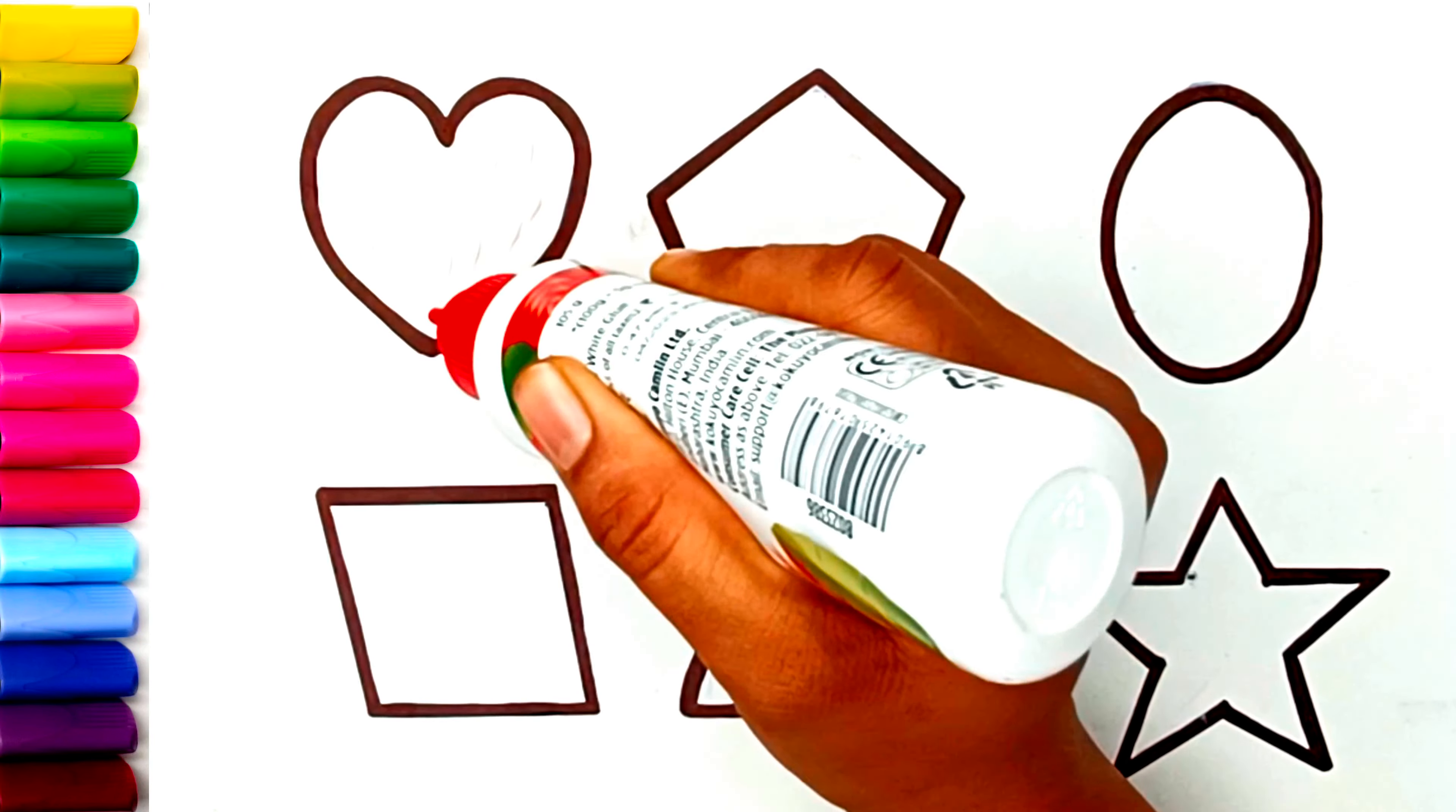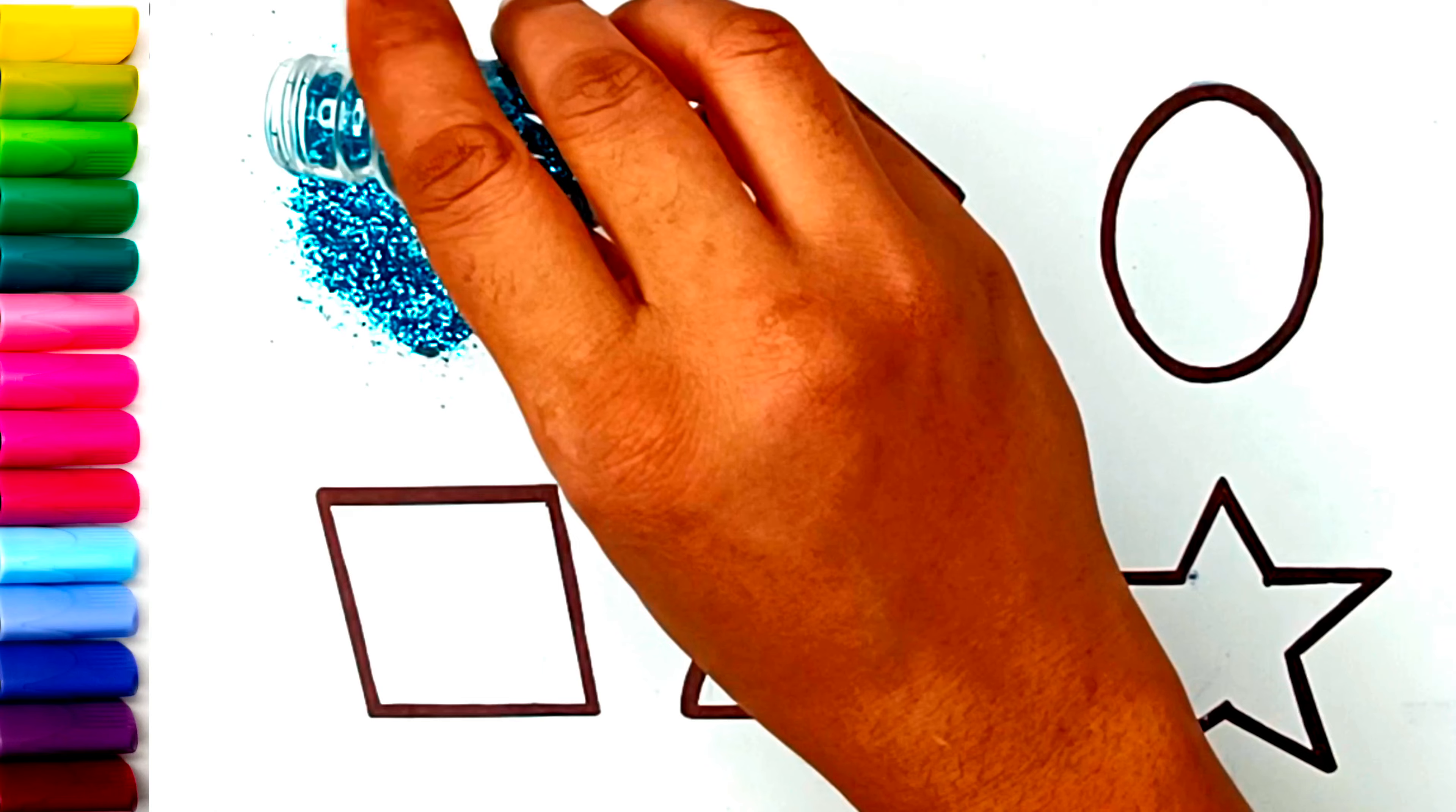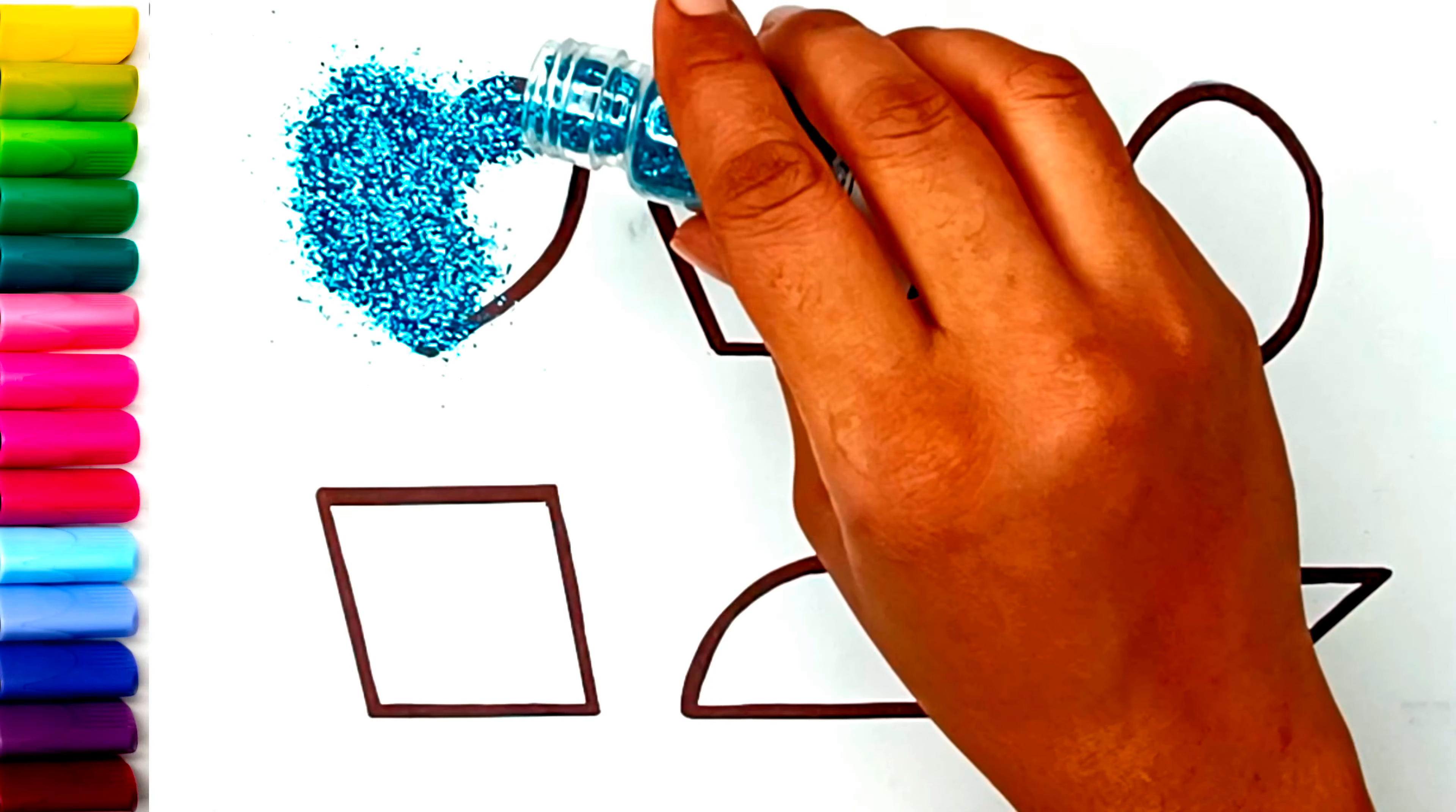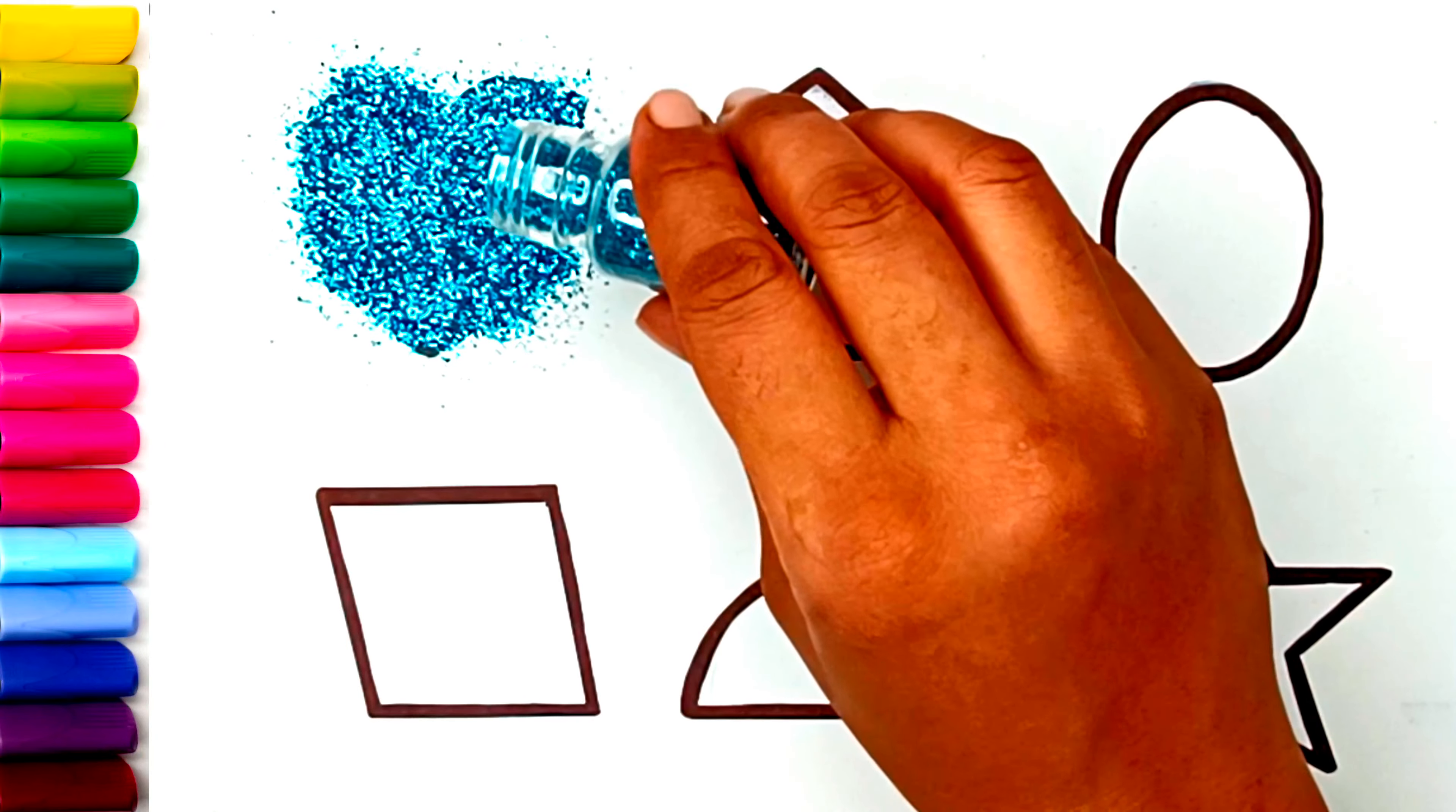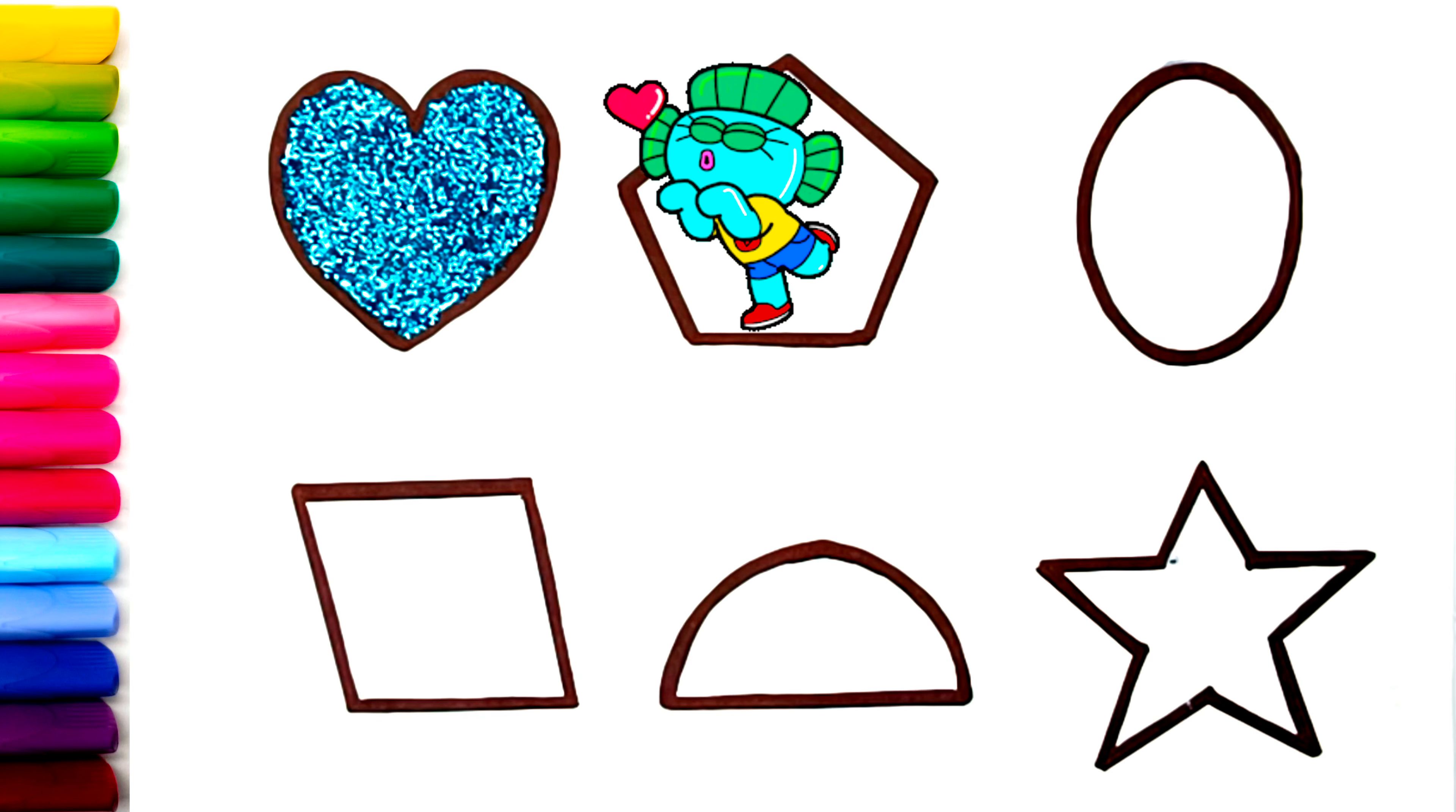Let's learn some colors. Next time won't you sing with me? A, B, C, D, E, F, G, H, I, J, K, L, M, N, O, P, Q, R, S, T, U, V, W, X, Y, Z. Now I know my ABCs, next time won't you sing with me?